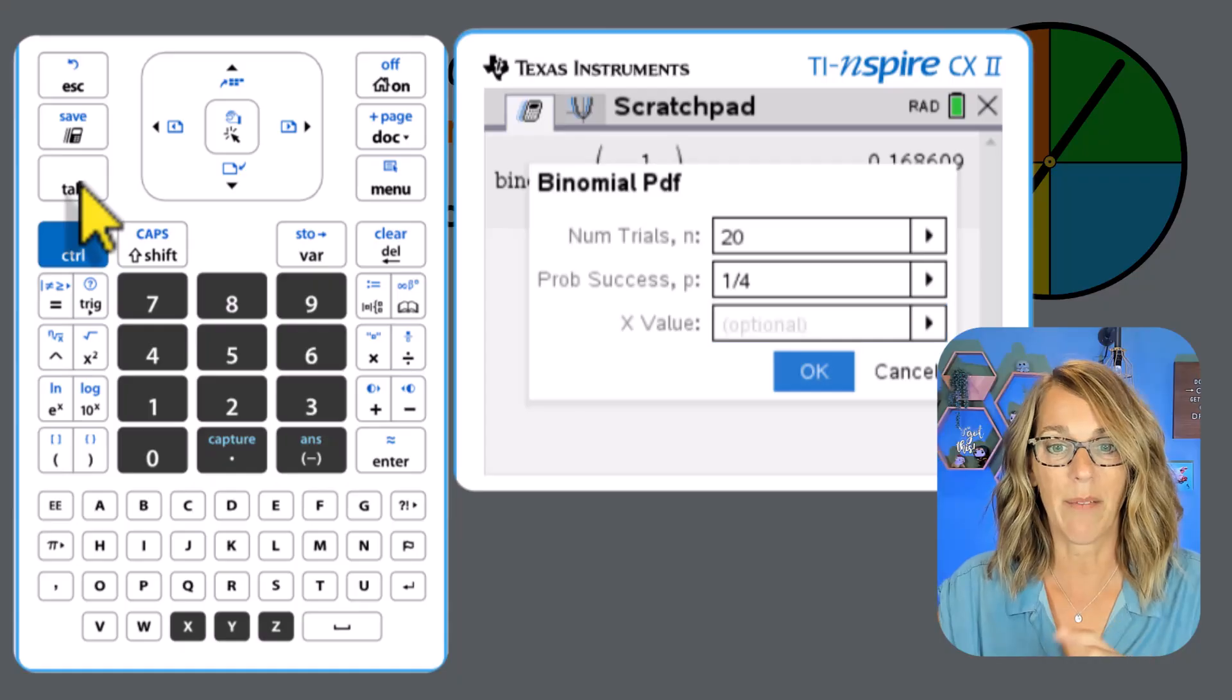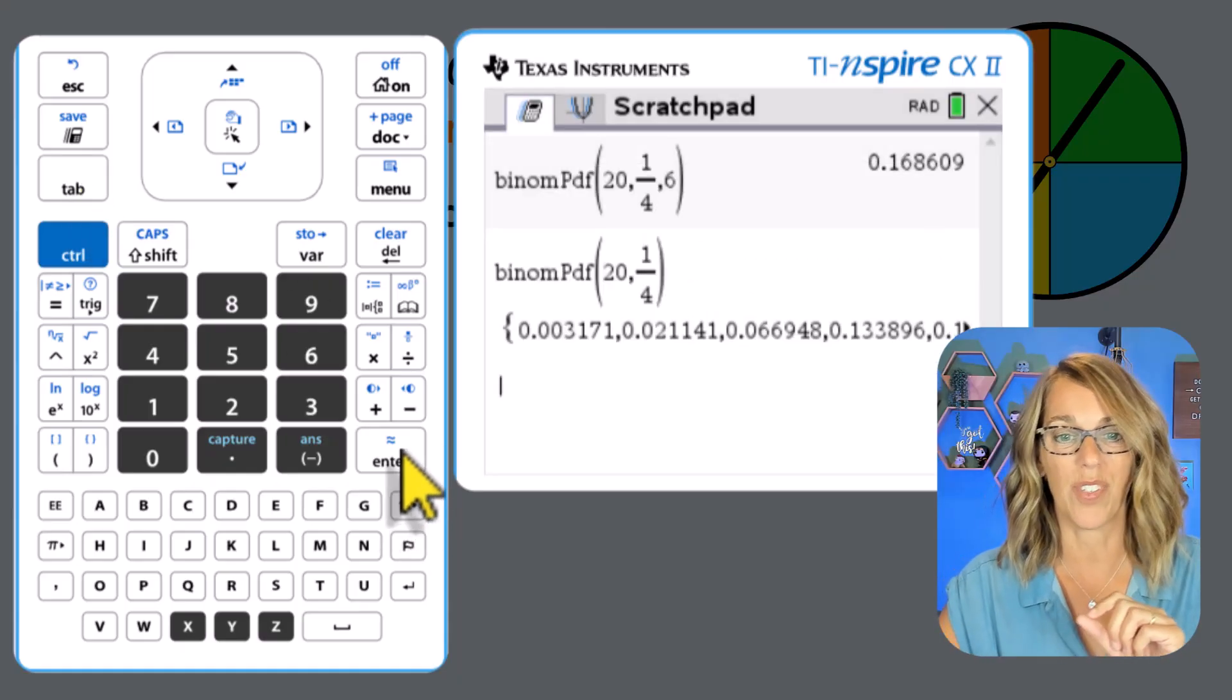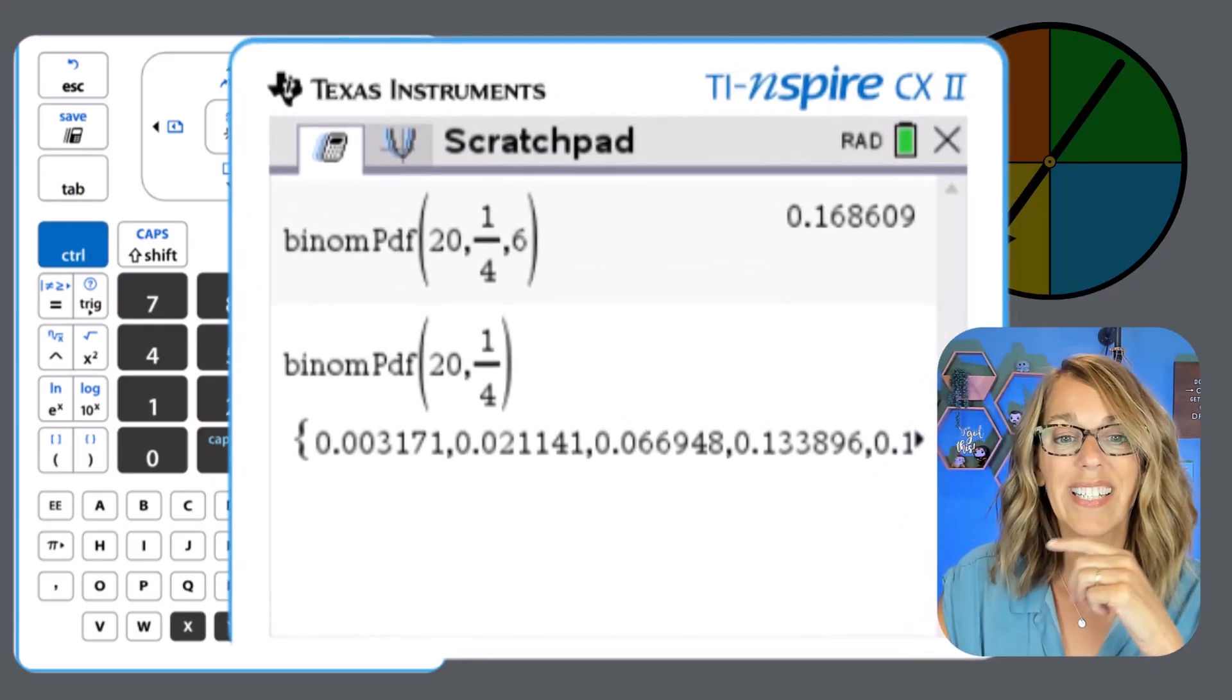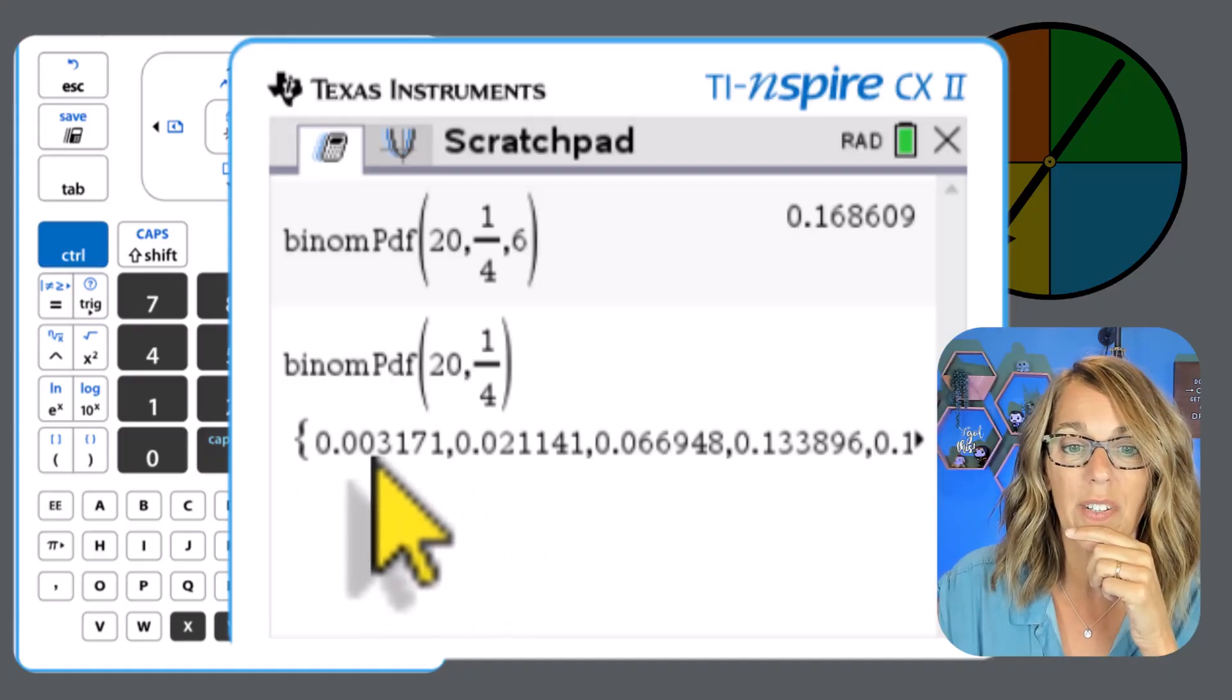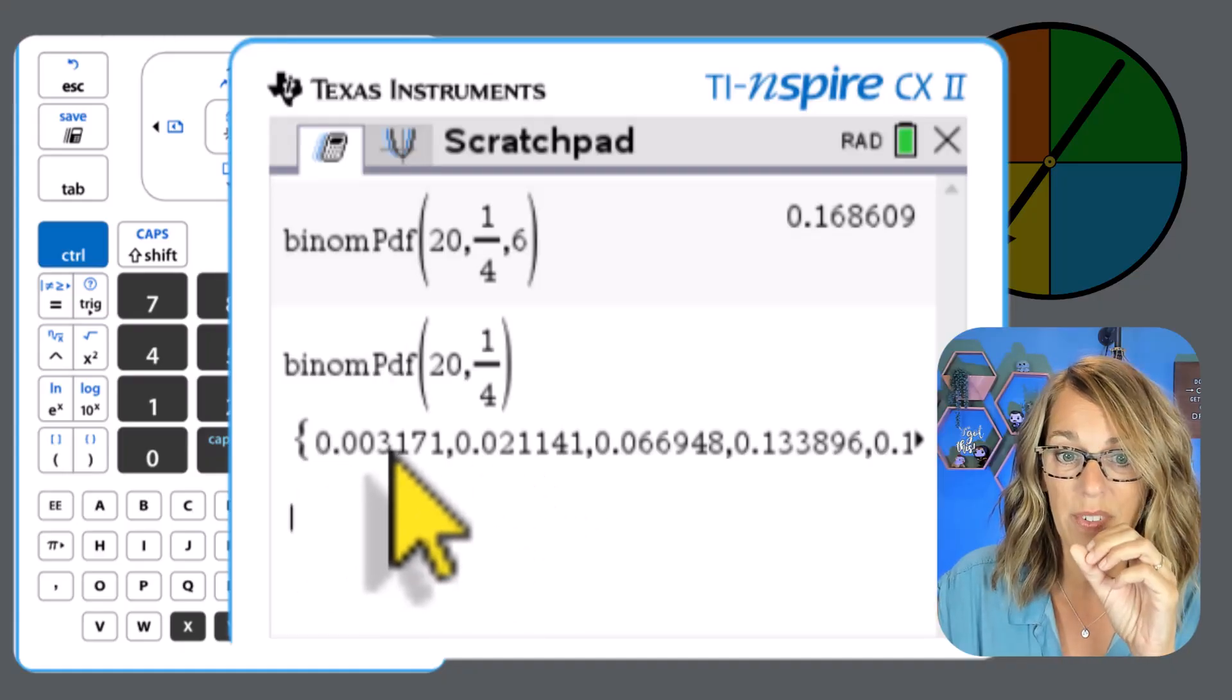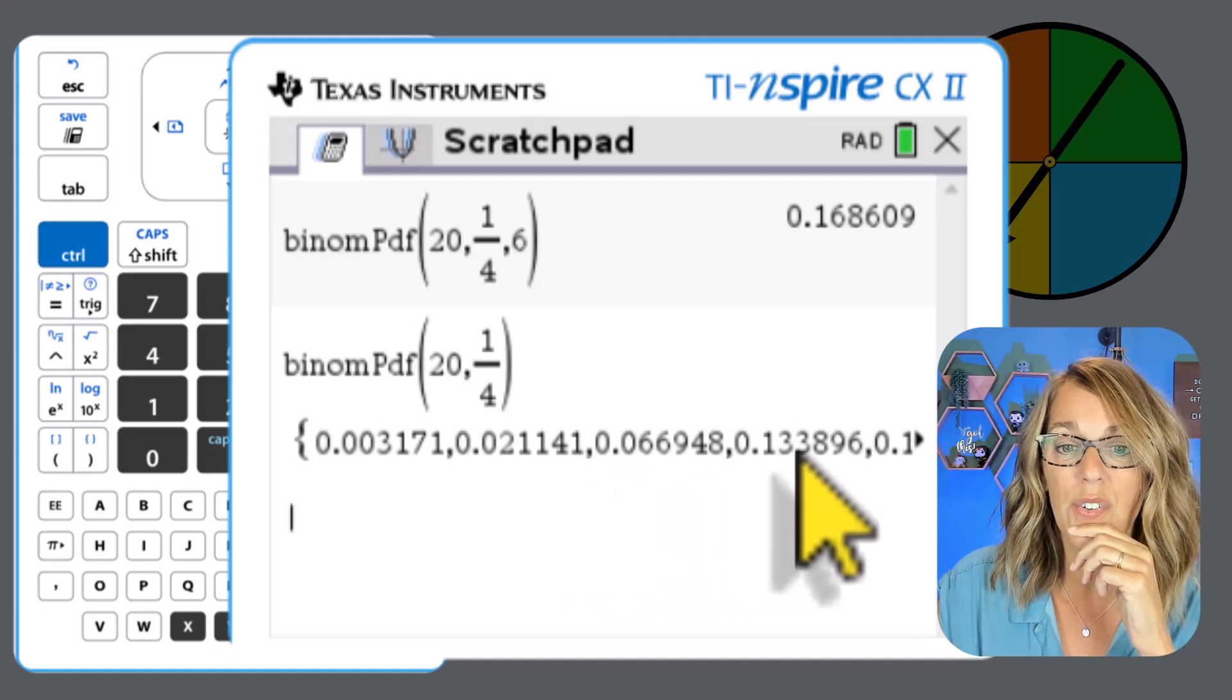And then notice how on the x value, it actually says optional. I'm going to leave it off this time, and then tap down one more time and choose okay. So what this list has given me is the probability, this first number here is the probability of getting zero yellows, the probability of 123.